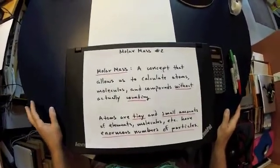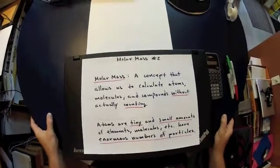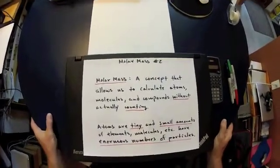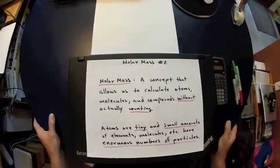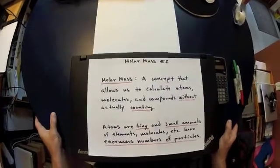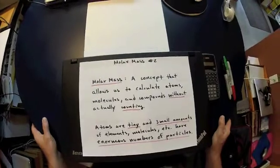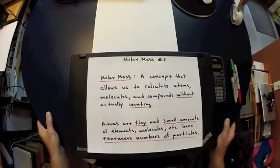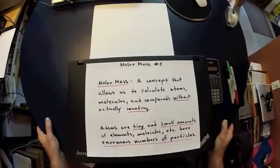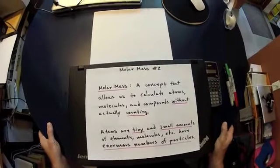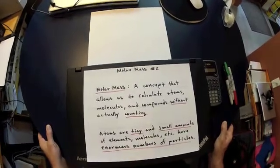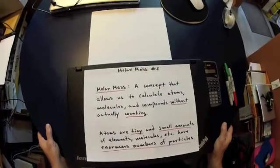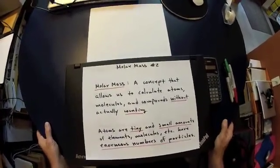Today's short video lesson is an extension of Molar Mass Number One. In that video, we defined molar mass using an analogy involving massing 12/16 penny nails to count nails without actually counting them. The definition of molar mass is a concept that allows us to count atoms without actually counting them — we have a defined mass of a particular element, compound, or molecule, and we relate that to the concept of the mole.